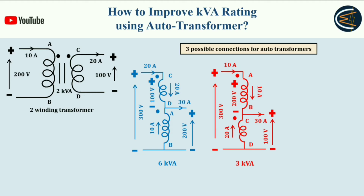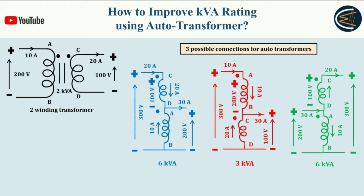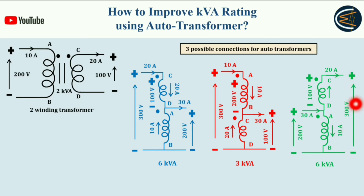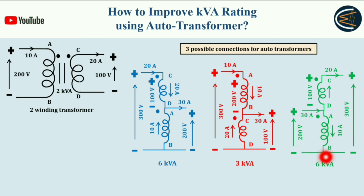Here also you are getting a higher KVA compared to the two-winding transformer, which is 2 KVA. Now for the last possible connection: the CD winding is placed here and the AB winding here, with the primary side being 200 volts applied across A and B. The secondary side is taken between terminals C and B. Across the secondary side we get 300 volts — because AB winding has a rated value of 200 V and CD winding 100 V, giving 300 V total. Calculating gives 6 KVA as the power rating.